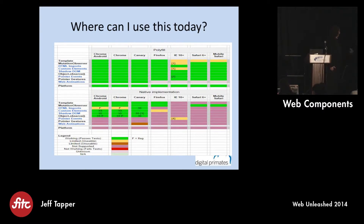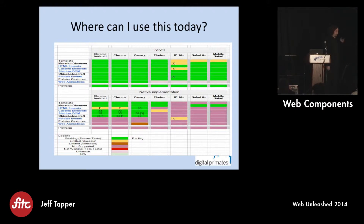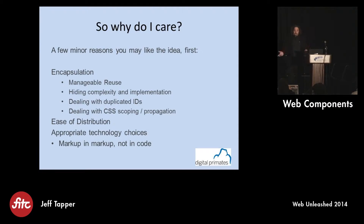A couple of things to bear in mind: on all of the Chrome ones you can see the version numbers inside the green that tell you which version they became supported in. But even in the latest Chrome Canary, we still don't have all of the pieces. This particular chart is a couple of weeks old now — Canary now has a few more green boxes than it did three weeks ago when I copied this in.